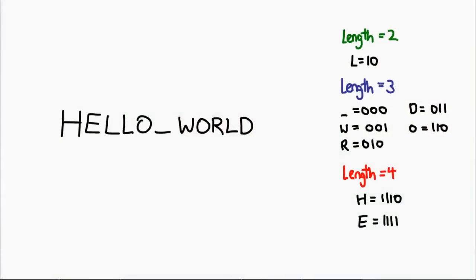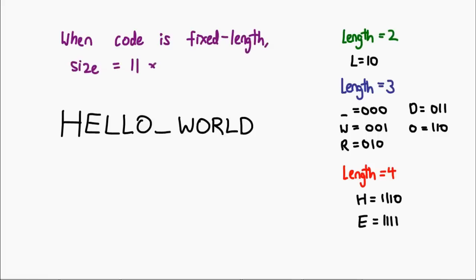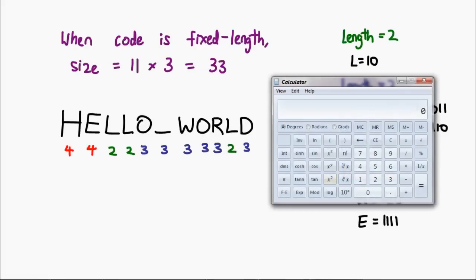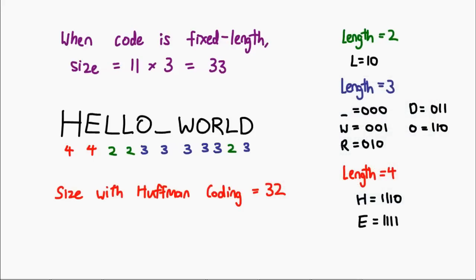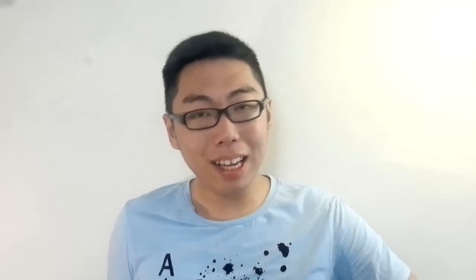So here's the big question: how much compression did we actually achieve? As calculated earlier, when every character is represented with 3 bits the string is 33 bits. However, we now have a variable-length Huffman code. Applying that to each character and summing up, we discover the size is now 32 bits. It's not much, but using Huffman coding we've saved a bit. And that, ladies and gentlemen, is how you do Huffman coding.